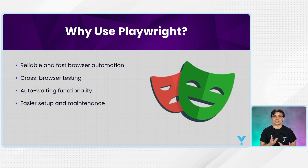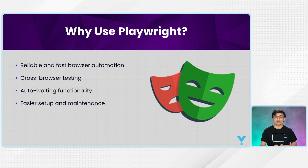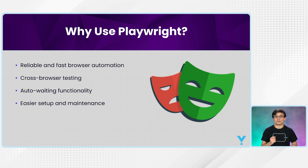In Selenium, there were lots of wait issues — that's why you had to use implicit waits as well as explicit waits. But in Playwright, you have auto-waiting functionality, which means you do not need to explicitly use any sort of waits.